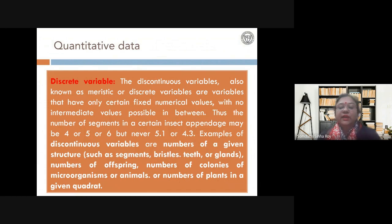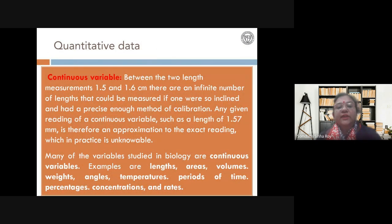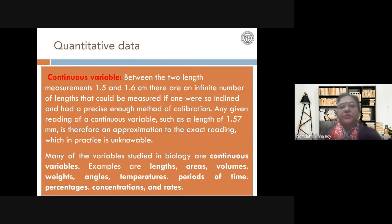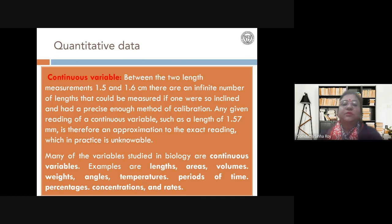Continuous variables are different. Between two lengths, say 1.5 and 1.6, or between 1 and 2, you can have an infinite number of values — 1.1, 1.2, 1.3, and so on, or even 1.11, 1.12, 1.13 — depending on how many decimal places you take. For example, measuring the length of a pen with a regular scale gives one value, with a vernier caliper you get one more decimal place, and with a screw gauge even more accuracy.